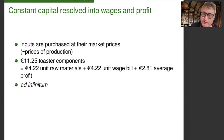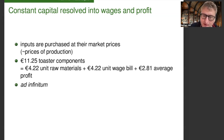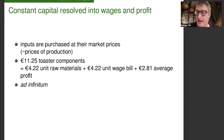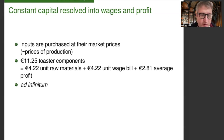To talk through the example of our toaster: we had $11.25 of toaster components. In the toaster component manufacturing industry, maybe $4.22 is the unit raw materials, $4.22 is the unit wage bill in that sector, and $2.81 is the average profit. We can then go back further to the toaster components' components industry, ad infinitum. In this way, the constant capital can always be broken down into constant capital, wages, and profit, and at the limit, the constant capital component disappears and we are left only with wages and profit.